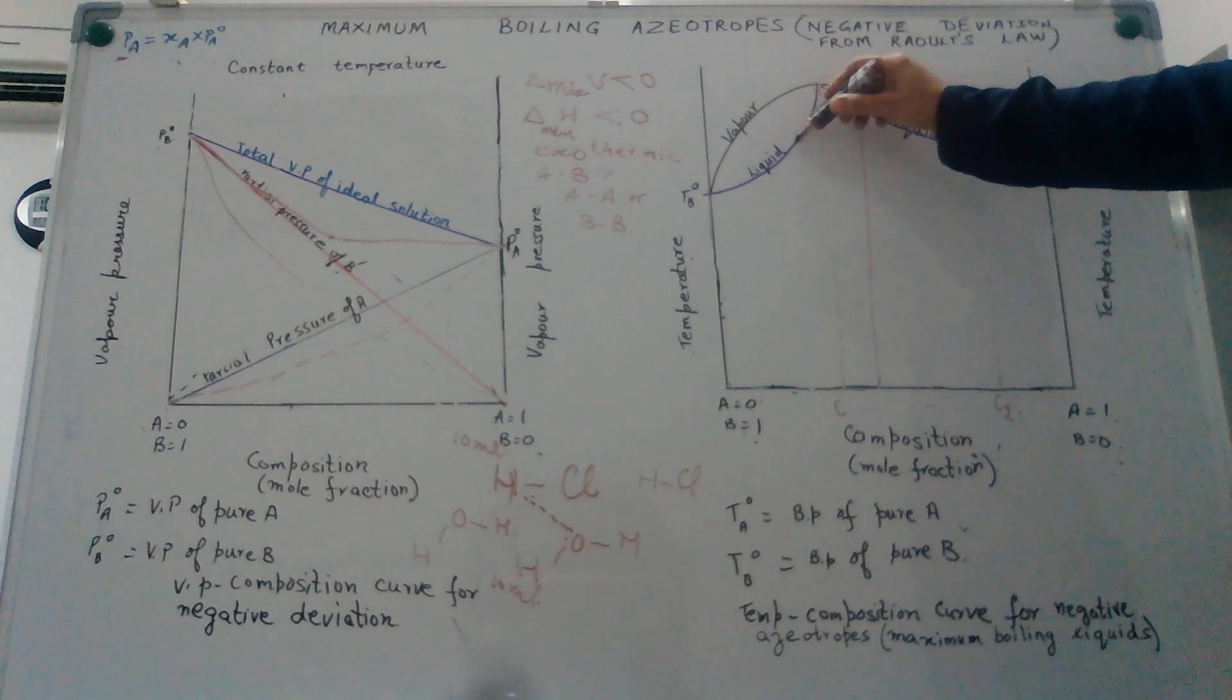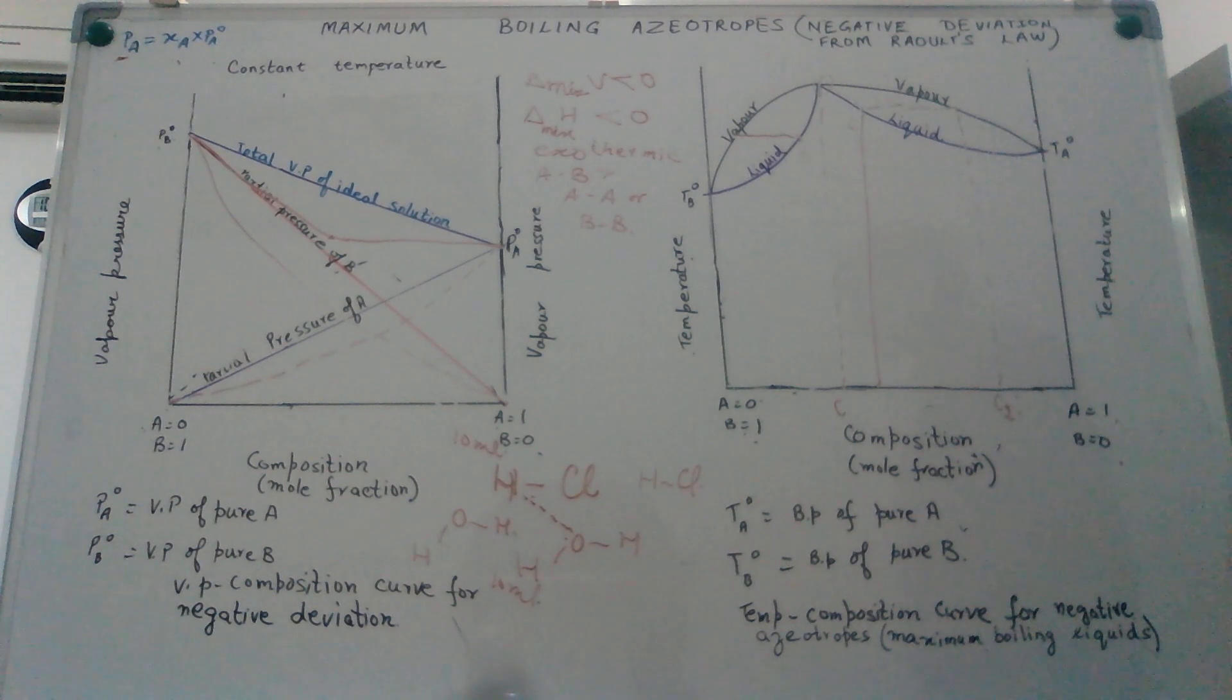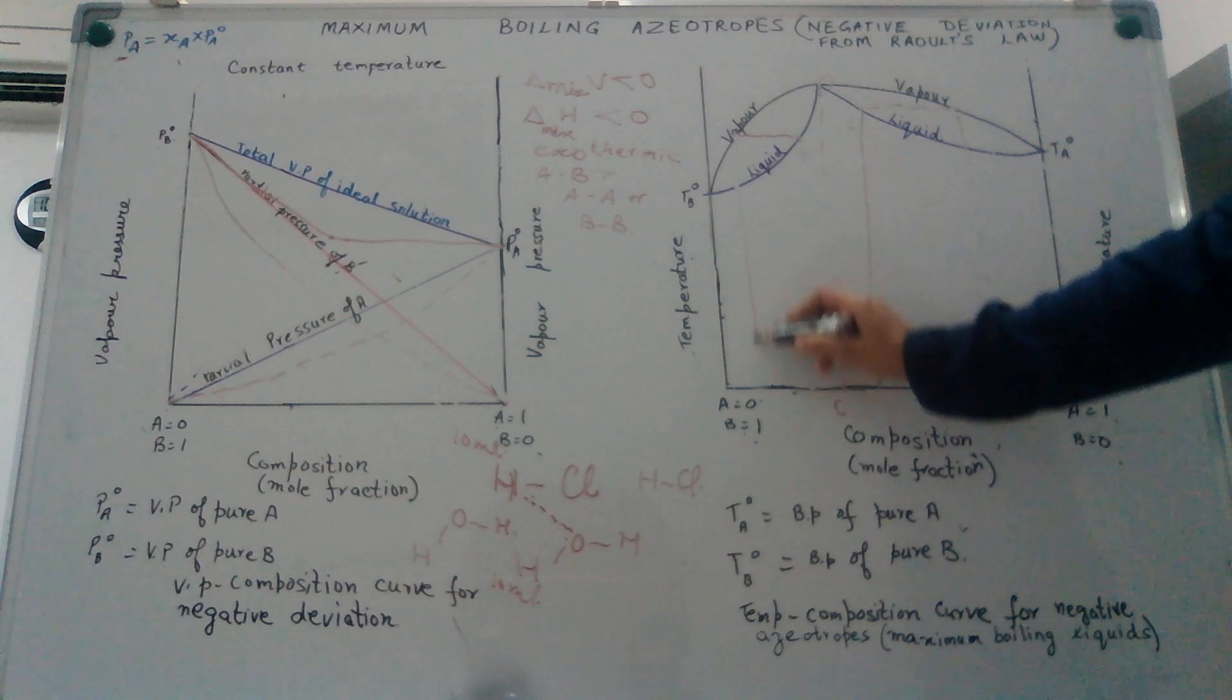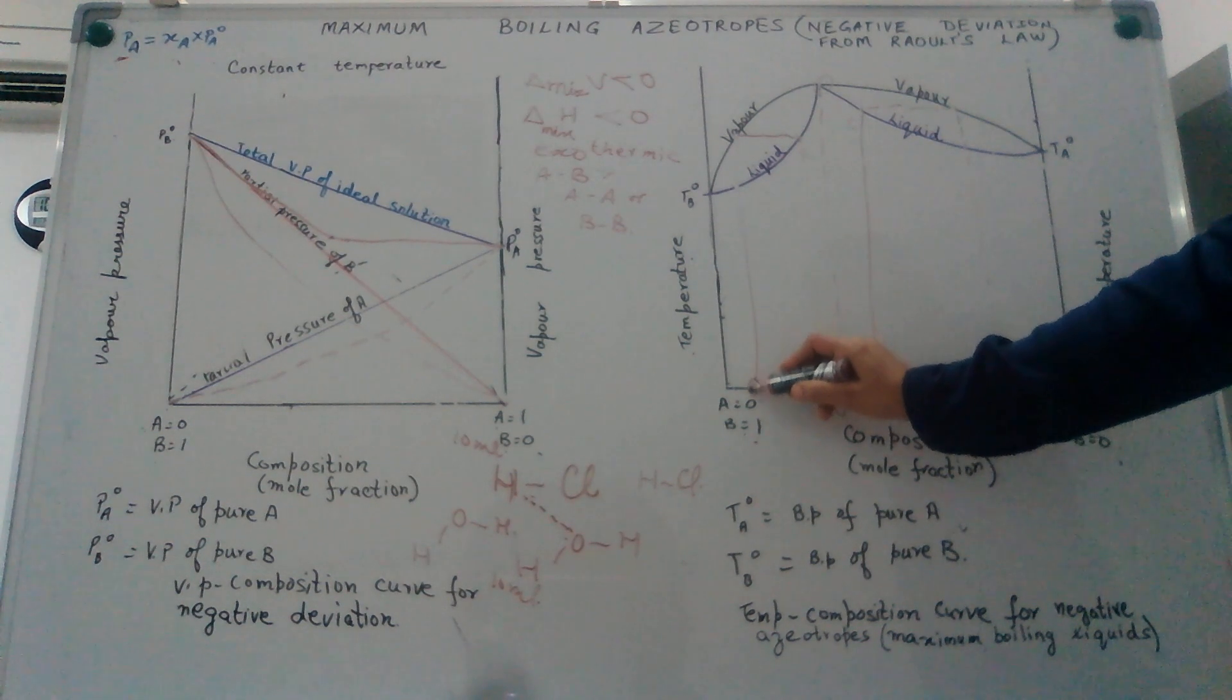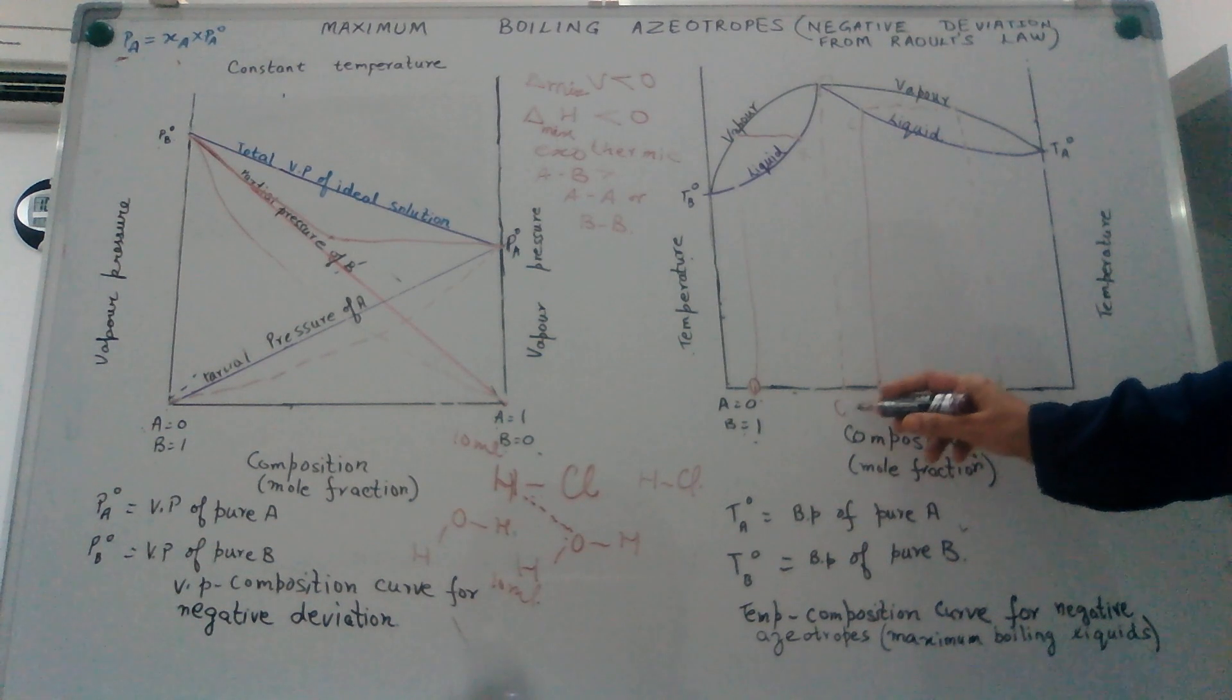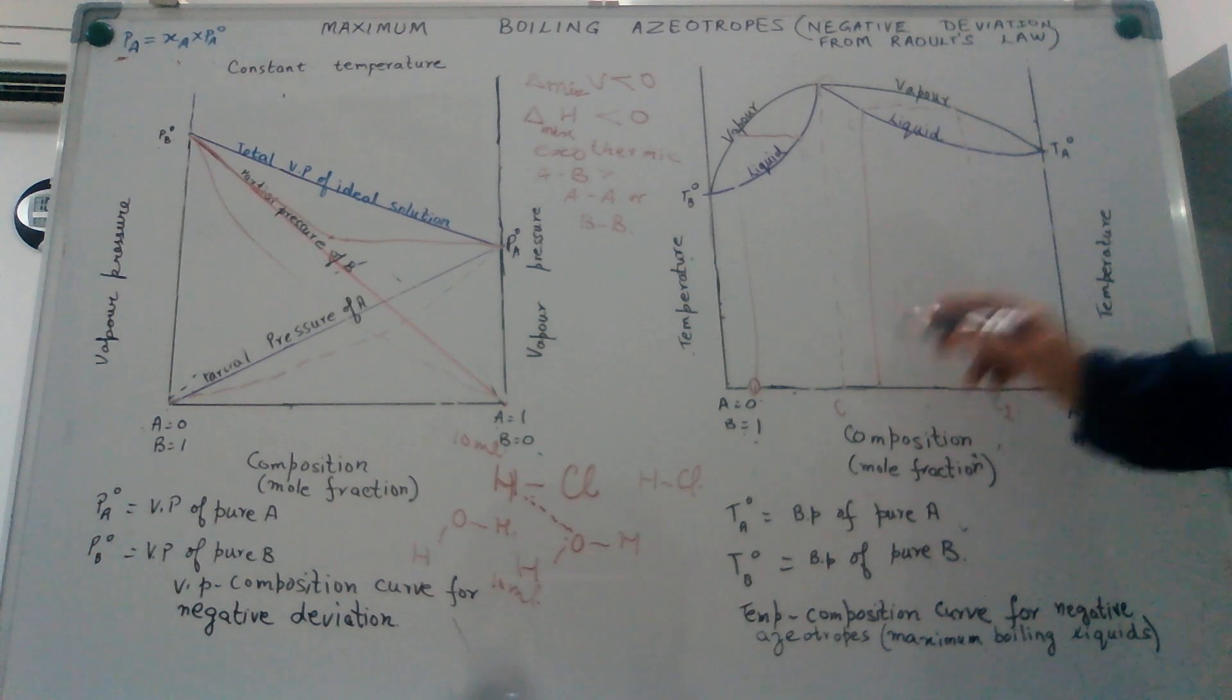Again, if you heat this at the boiling point, the temperature becomes constant. You condense, the distillate will become richer in B but again the residue will reach a point where it will have the azeotropic composition.